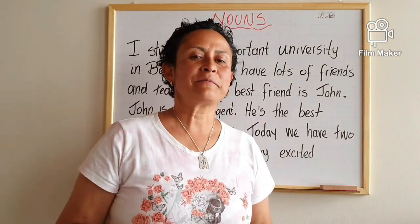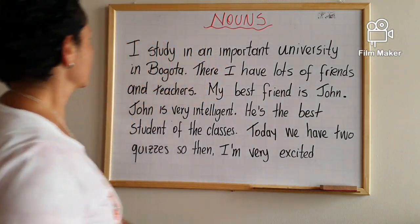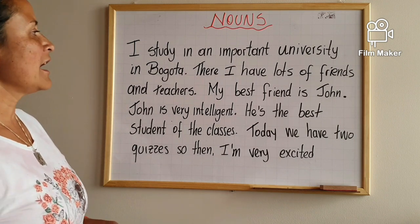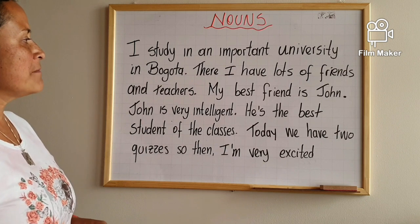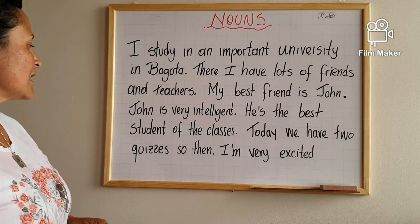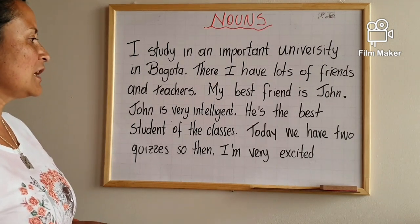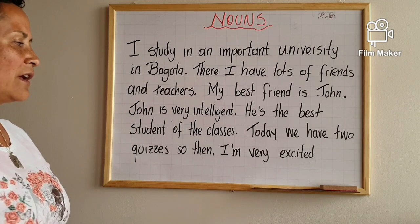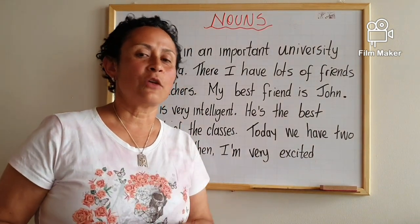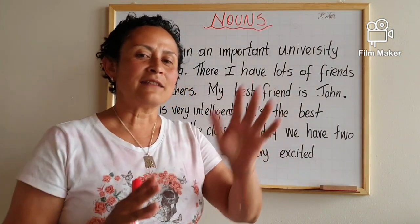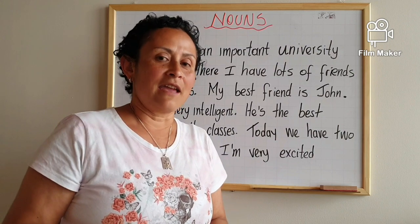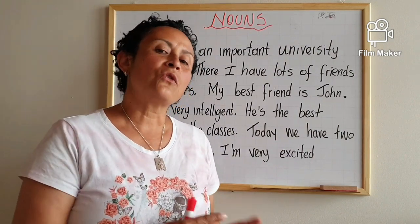Now let's do an exercise. Pay attention to this text: 'I study in an important university in Bogota. There I have lots of friends and teachers. My best friend is John. John is very intelligent. He is the best student in the classes. Today we have two quizzes, so I am very excited.' I'm going to underline the nouns and analyze whether they are proper or common nouns, and whether they are abstract or concrete.